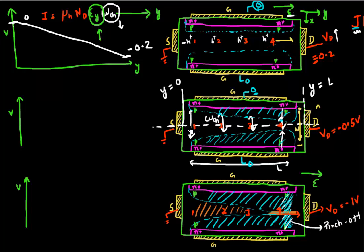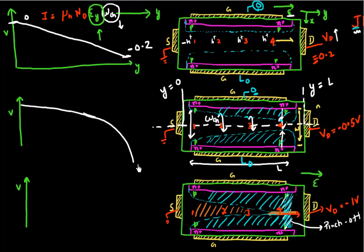Near the source the channel width is larger, so the electric field is smaller. Moving closer to the drain, the channel width decreases and the electric field increases. The potential drop is therefore much larger close to the drain side. For example, at minus 0.5 V applied, most of the potential drop occurs near the drain, making the profile highly non-linear.